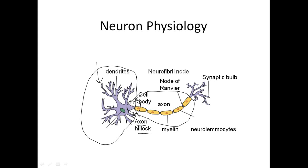The axon can be wrapped in myelin, which we call the myelin sheath. The cells that make up the myelin sheath in the peripheral nervous system are called neurolemmocytes — we used to call them Schwann cells. In between the Schwann cells, in between the myelin sheath, there are spaces called neurofibral nodes.